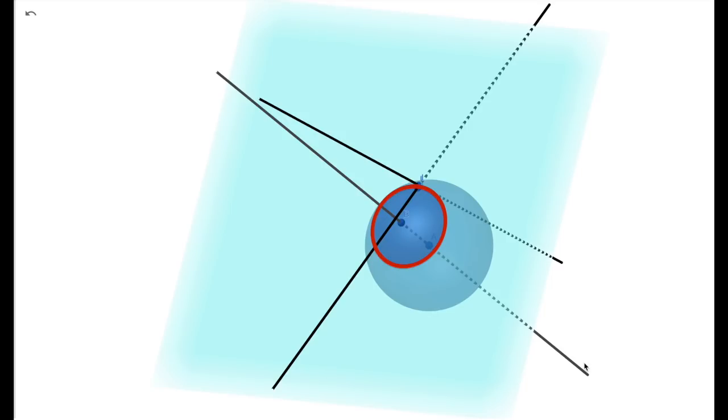So if you know the angle and the distance, you still can't figure out your exact position. The only thing you know is that you're somewhere on this circle. In order to get your exact position, you need to measure a different star at that same time. So you get a second circle, which only has two intersections with the first one. And it is usually quite obvious which of these two points to choose.